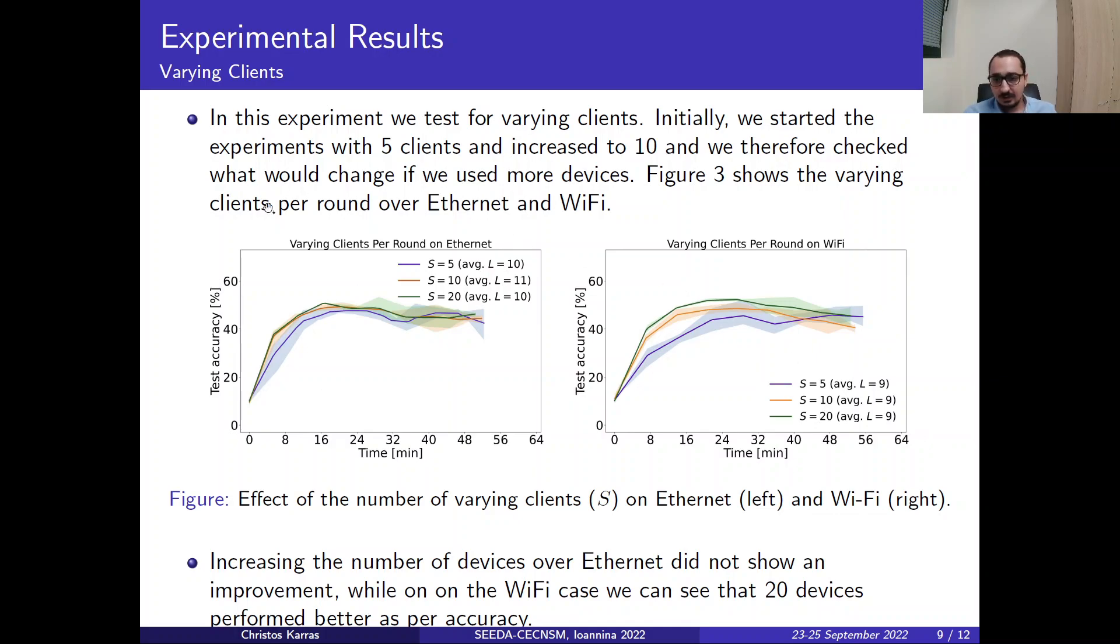And here we have the varying clients per round over Ethernet and over Wi-Fi. S refers to the varying clients. So we start with 5 devices.